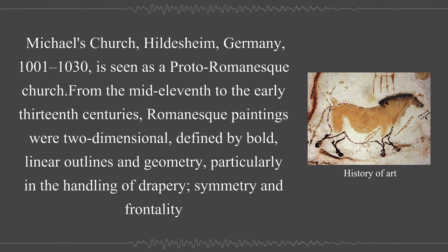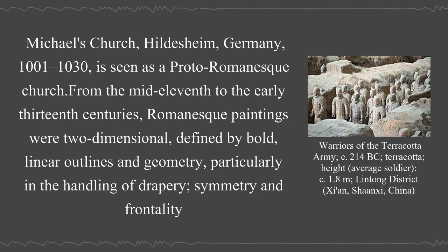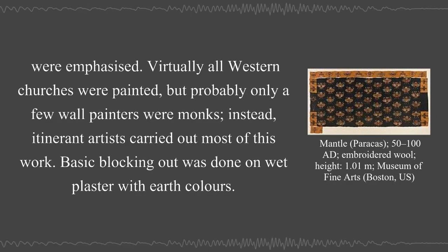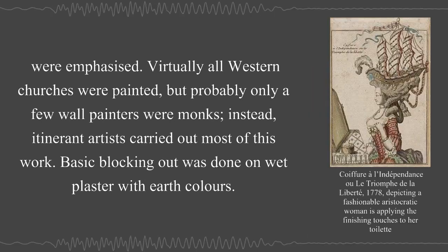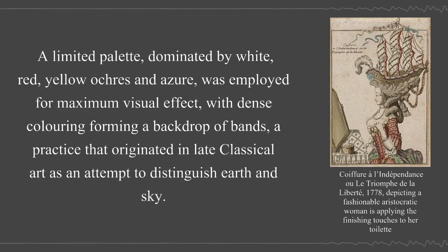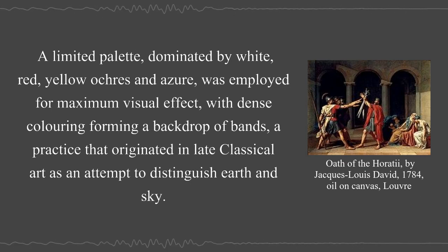From the mid-11th to the early 13th centuries, Romanesque paintings were two-dimensional, defined by bold linear outlines and geometry, particularly in the handling of drapery. Symmetry and frontality were emphasized. Virtually all Western churches were painted, but probably only a few wall painters were monks — instead, itinerant artists carried out most of this work. Basic blocking out was done on wet plaster with earth colors. A limited palette, dominated by white, red, yellow ochres, and azure, was employed for maximum visual effect.